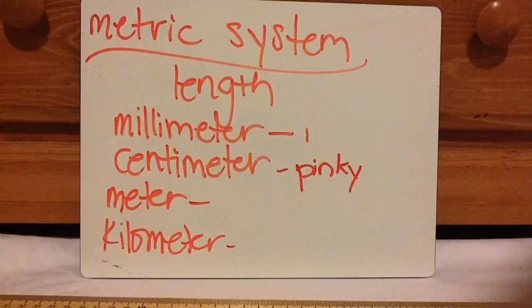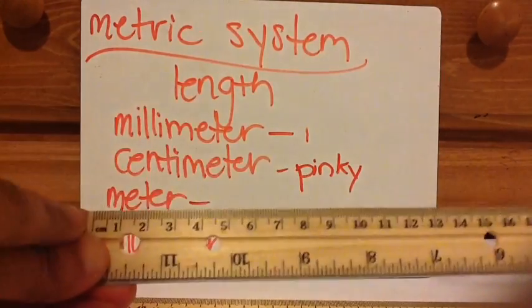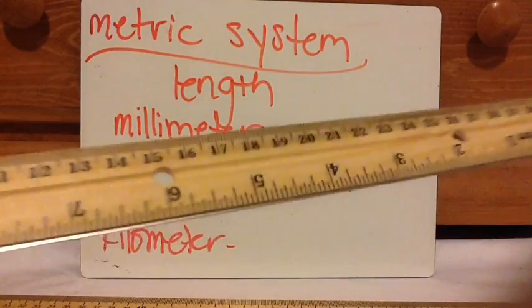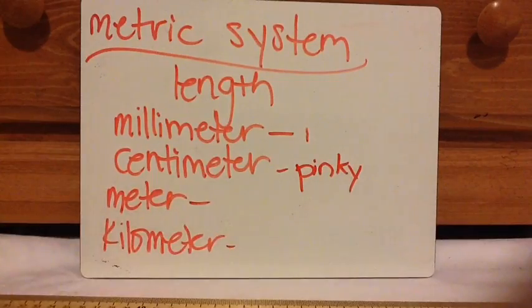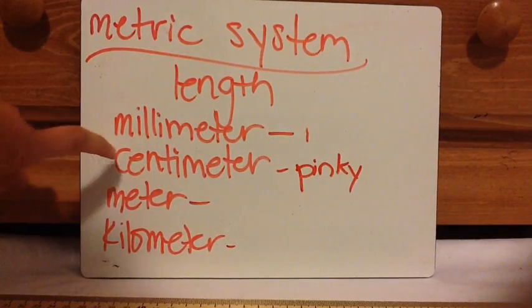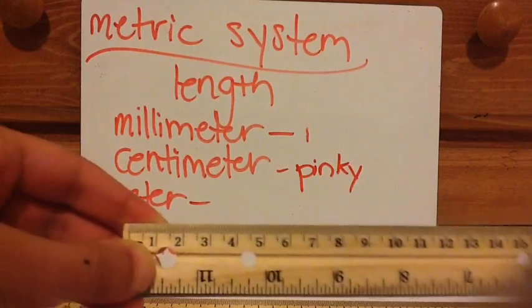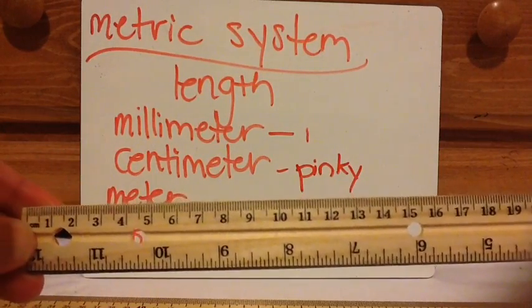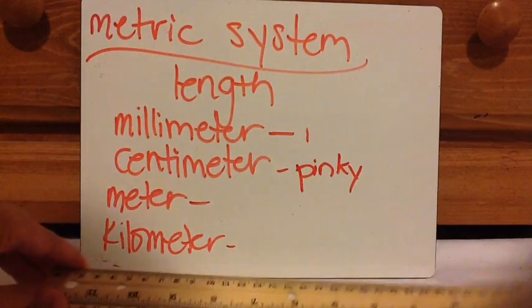A decimeter is 10 centimeters — from here all the way here on the ruler. People don't commonly use it, but it fits the base-10 system: 10 millimeters equal a centimeter, 10 centimeters equal a decimeter, 10 decimeters equal a meter. So from 0 to 10 centimeters is a decimeter. Your place-value blocks that you use in school are a decimeter, so that's a nice connection.